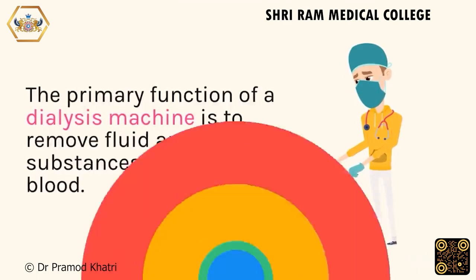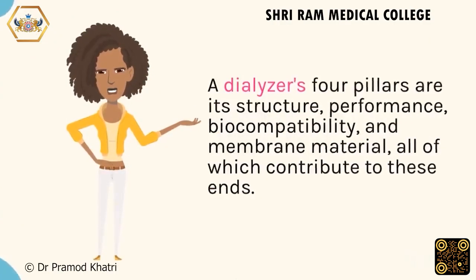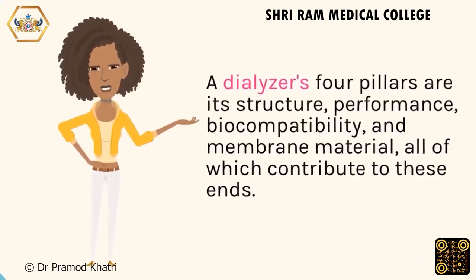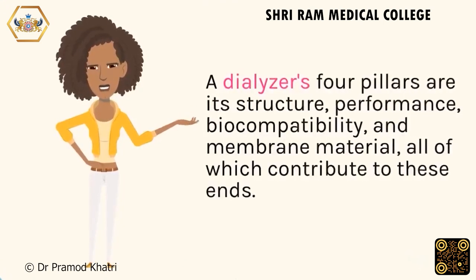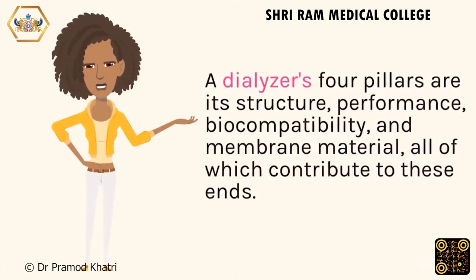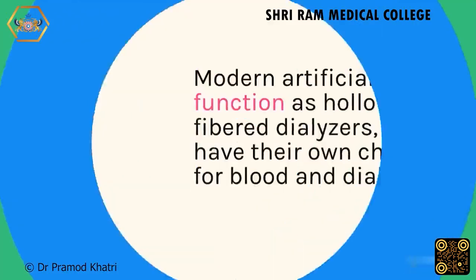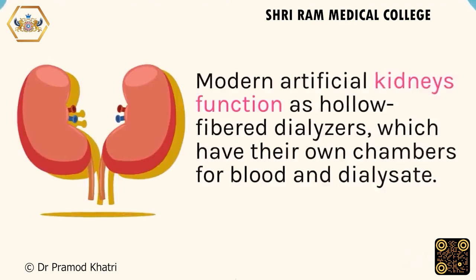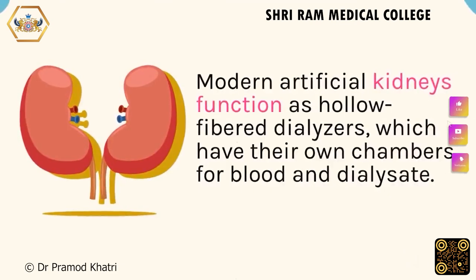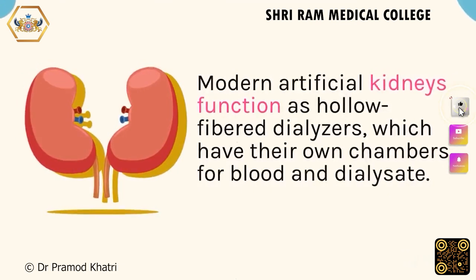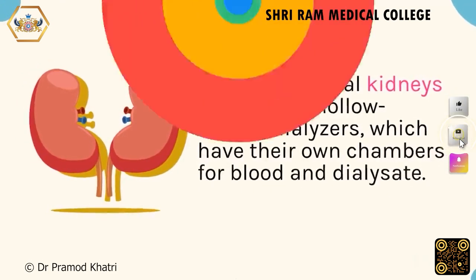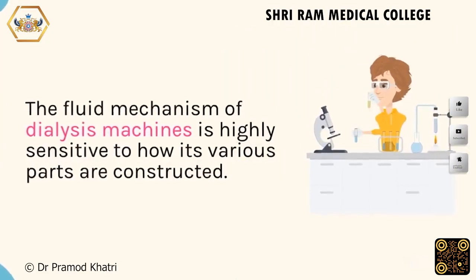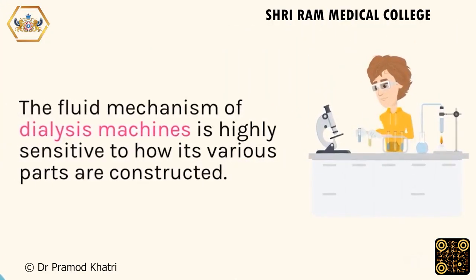A dialyzer's four pillars are its structure, performance, biocompatibility, and membrane material, all of which contribute to these ends. Modern artificial kidneys function as hollow fiber dialysis, which have their own chambers for blood and dialysate. The fluid mechanism of dialysis machines is highly sensitive to how its various parts are constructed.